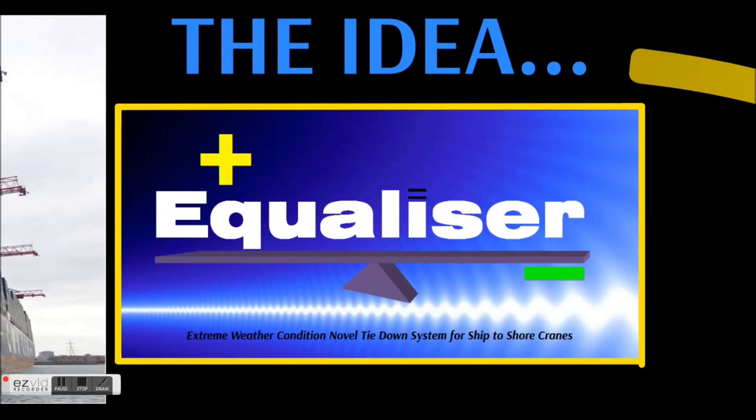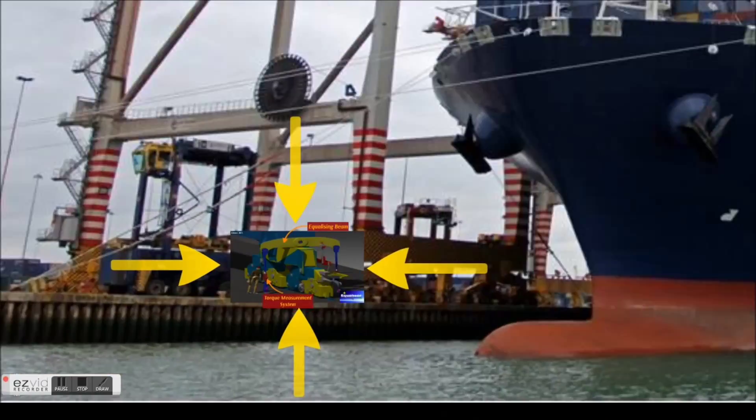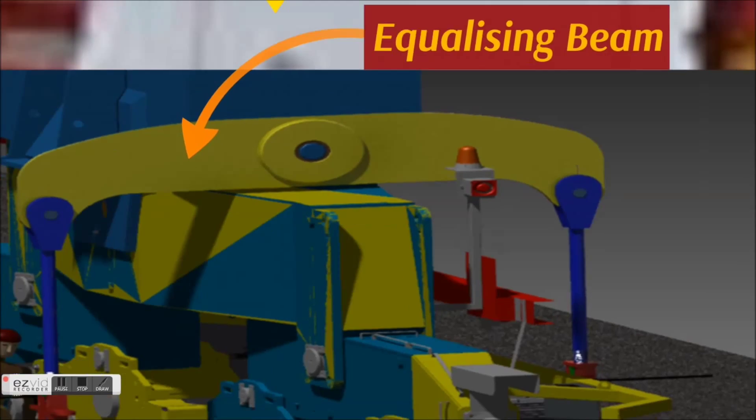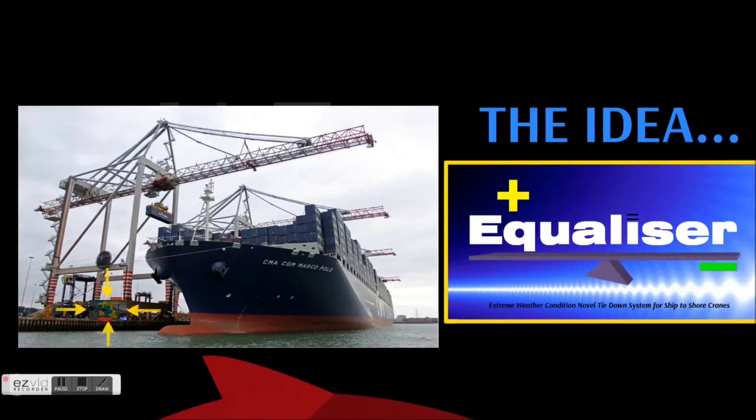My product is Equalizer, which is an extreme weather novel tie-down system for ship to shore cranes. This is a new design approach which utilizes an equalizing beam with a torque measurement system to equalize huge uplift forces on the crane storm anchor system.